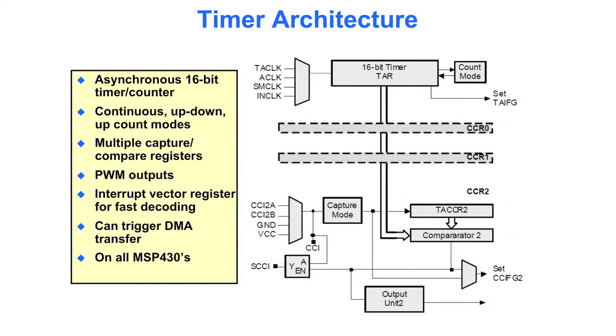There are multiple, and depending on which timer you have, anywhere from 3 to many more than that, multiple capture and compare registers, and the ability to synthesize PWM outputs. The timers can generate interrupts, there's an interrupt vector register for fast decoding, and they can also trigger DMA transfers.